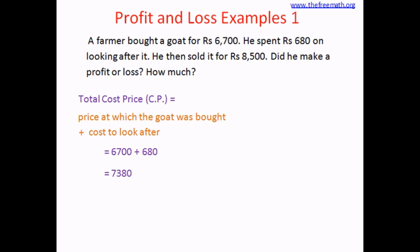If you can do mental math, go ahead; if not, you can always use the regular method. The selling price is just one number, which is 8,500. So SP is 8,500. You can see that the money spent was less than the money he got, that means SP is greater than CP. So this is an example of profit — he had a profit.